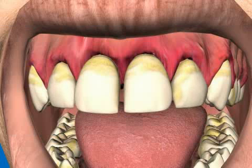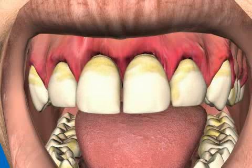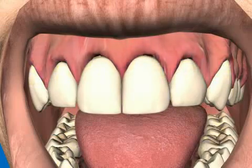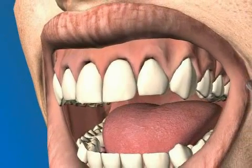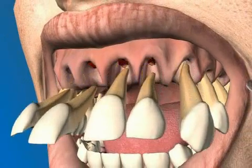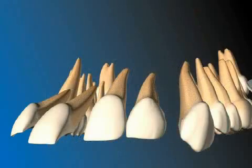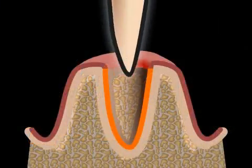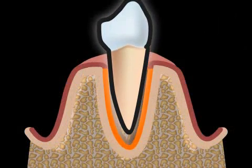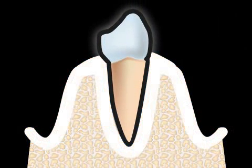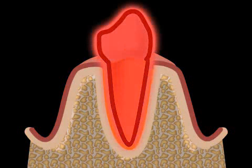Periodontosis is the incorrect term for a pathological inflammation of the periodontal apparatus. The terms periodontosis, periodontal disease, and periodontitis are all derived from the word periodont. This term describes the periodontal apparatus — in effect, the anchoring system of the teeth in the bone. 'Peri' means around and 'dont' means tooth.